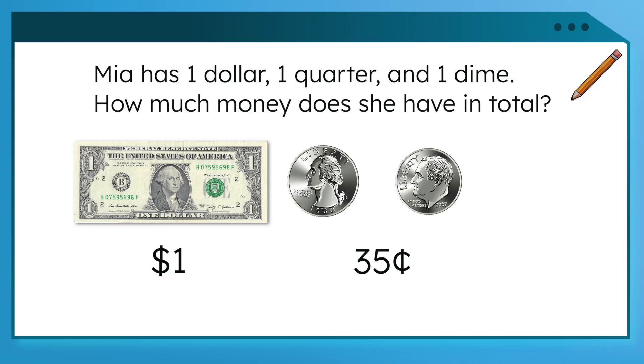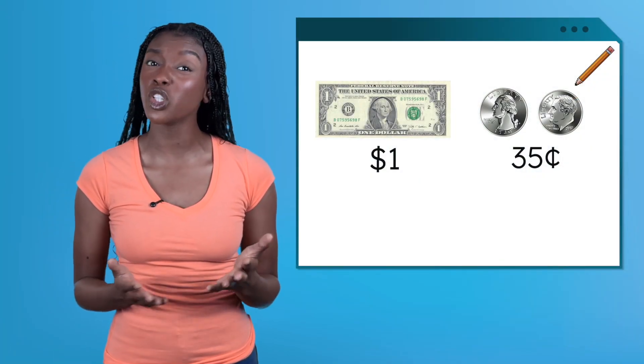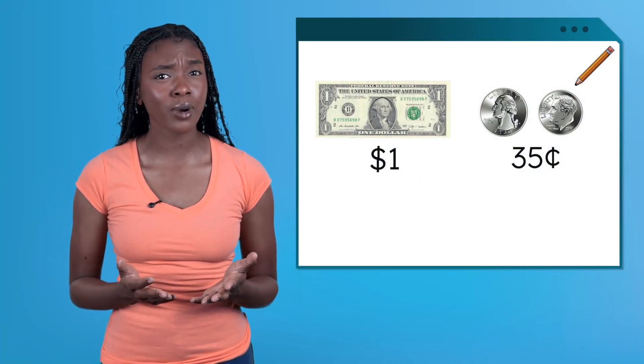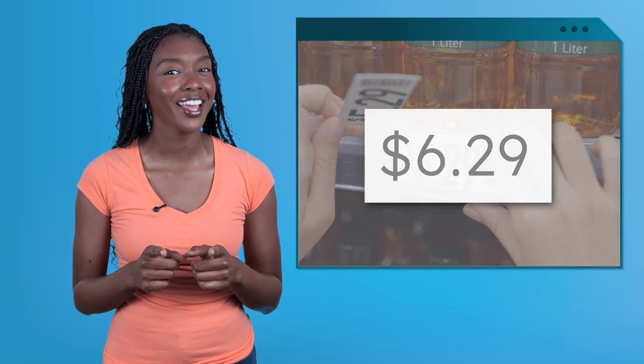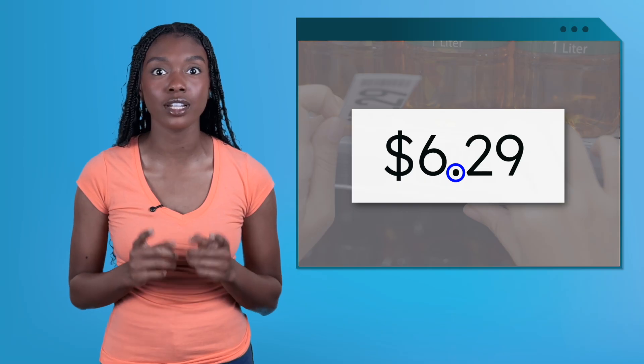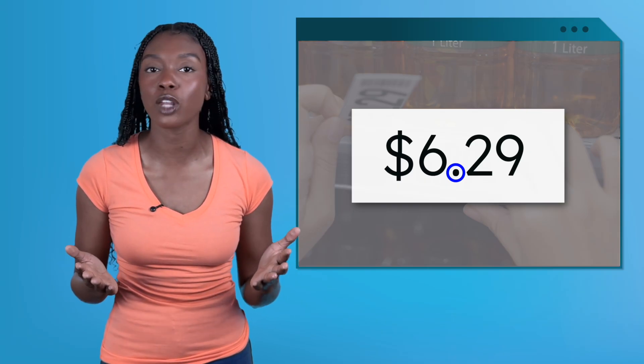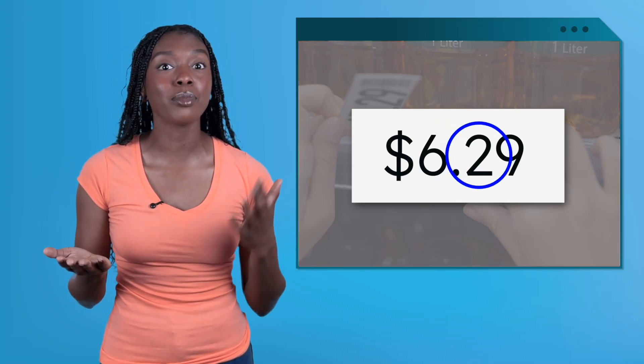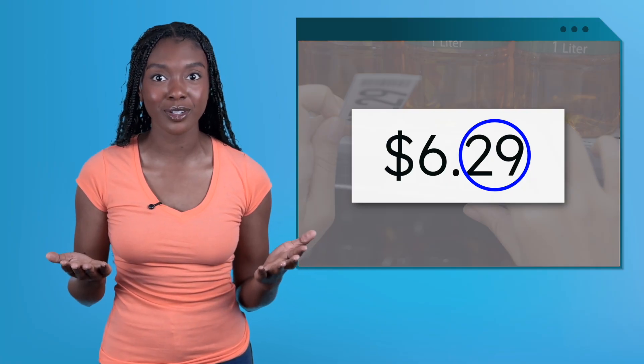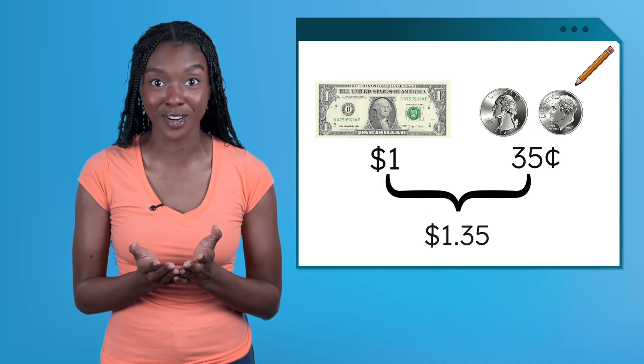If we put this together, Mia has one dollar and 35 cents. But if you go to the store, you will see this written differently. Have you ever seen a price written like this? Here's a cool fact: the dot in prices is called a decimal point. It helps us show both dollars and cents in one number. The number before the dot or decimal is the dollar amount, and the number after is the cent amount. So our dollar and cent amounts come together to make one dollar and 35 cents.